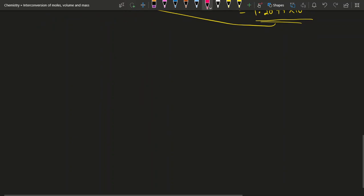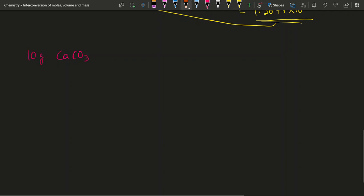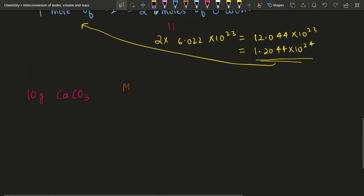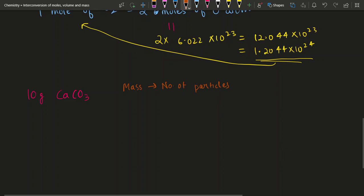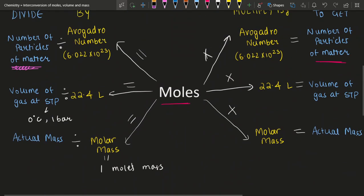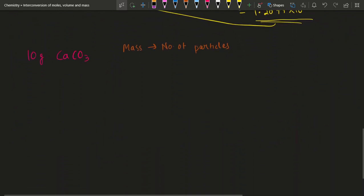You can do the same thing for mass. Let's take calcium carbonate, CaCO₃, and find out how many moles or particles lie in 10 grams of CaCO₃. You have the mass and want to figure out the number of particles. Going back to the chart: mass divided by molar mass gives moles, then multiply by Avogadro's number to get the number of particles. The mass is 10 grams, so divide by the molar mass. Let's figure out the molar mass.